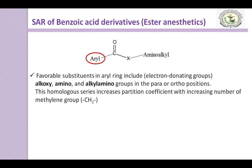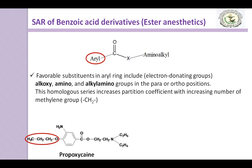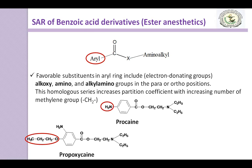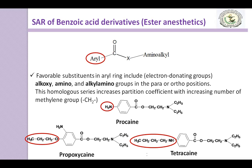This homologous series increases partition coefficient with increasing number of methylene groups. The structure of propoxycaine contains an alkoxy group attached to para or ortho positions. In procaine, there is a presence of an amino group at para or ortho positions, and tetracaine has an alkylamino group at para or ortho positions. All of these have electron donating groups and hence enhance local anesthetic activity.